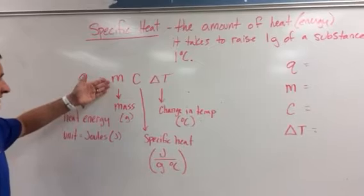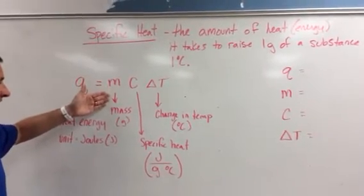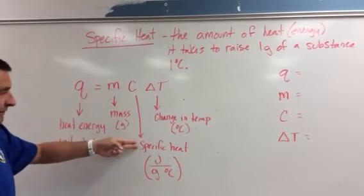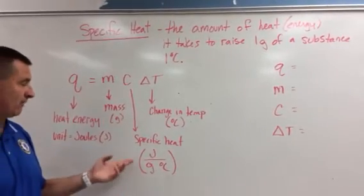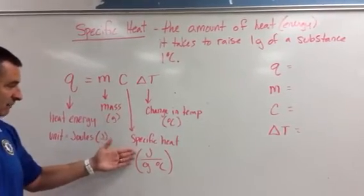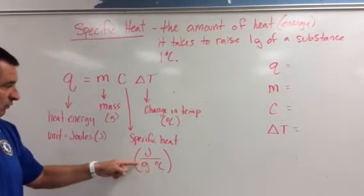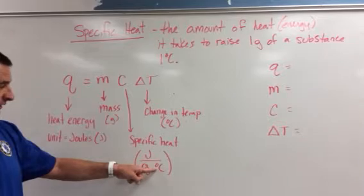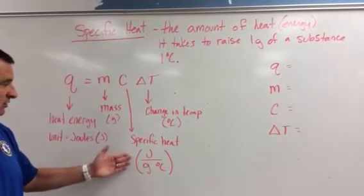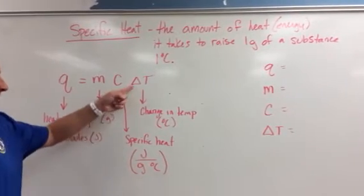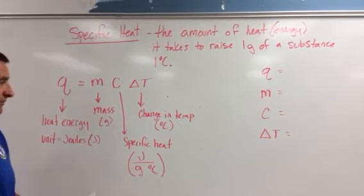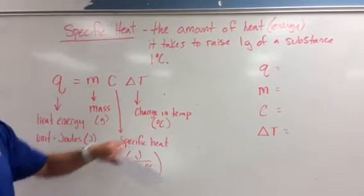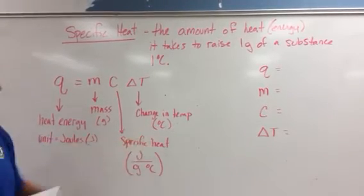Mass is M — little m — and the unit is going to be in grams. The C stands for specific heat, and it's a derived unit, so it has a complex unit with three things in one: it's joules divided by gram degree Celsius. Temperature is the change in temperature — final temperature minus the initial temperature — and that's going to be in degrees Celsius.